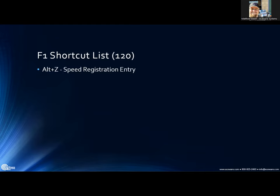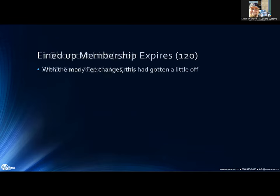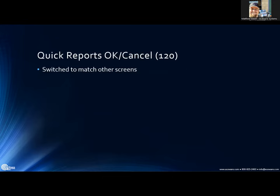The F1 screen, which shows keyboard shortcuts, now has an entry for Alt+Z for speed registration entry. Also, the membership expiration field on the course screen had gotten misaligned with all the different additions to the fees on the screen and field widening, so that's now been realigned — another minor but helpful change.